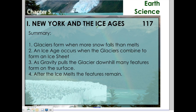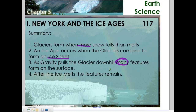When we deal with glaciers and the Ice Age, here's what you need to know: glaciers form when more snow falls than melts; an ice age occurs when glaciers combine to form an ice sheet; as gravity pulls the glacier downhill, many features form; and after the ice melts, the features remain behind. All the hills and lakes remain — that's how we know the glacier was here. This is the video for Chapter 5, Section 1. I hope it is useful — answer the questions below, and good luck.